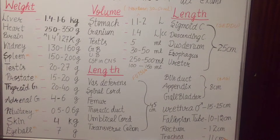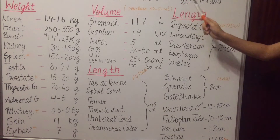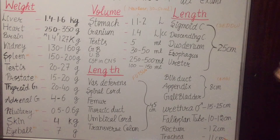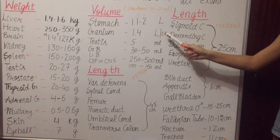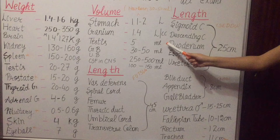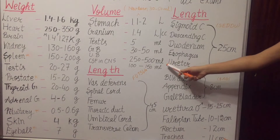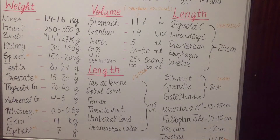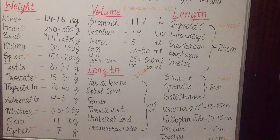Stomach volume is 1.1 to 2 liters; in newborns, stomach volume is 30 to 50 milliliter. Cranium volume is 1.4 liter. Testis volume is 5 milliliter. Gallbladder volume is 30 to 50 milliliter. Urinary bladder volume is 250 to 500 milliliter, and cerebrospinal fluid in the central nervous system volume is 100 to 150 milliliter.